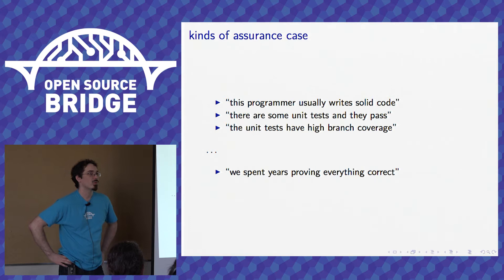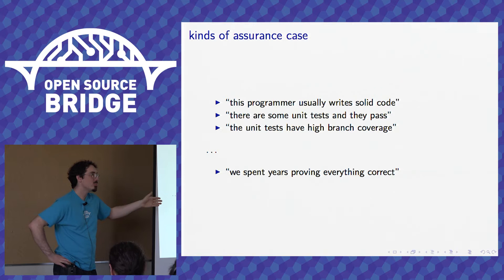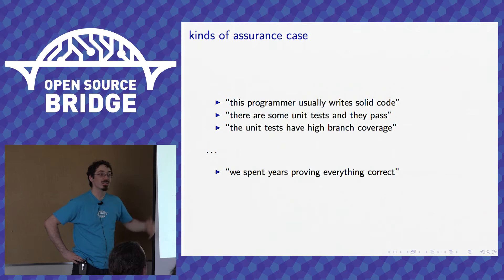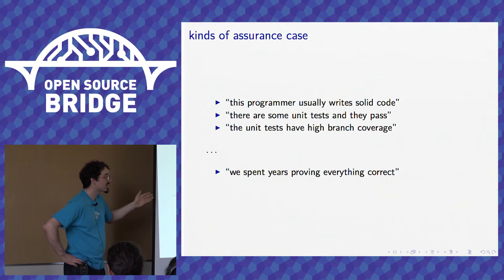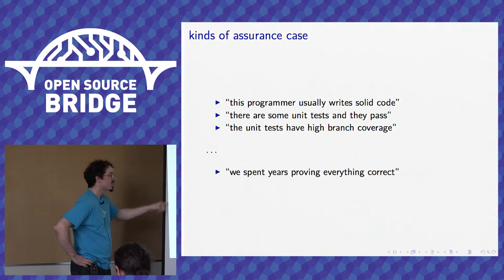Let's talk about what kinds of trustworthiness we might have — I'm going to call this an assurance case. One kind might be: I know the programmer who wrote this code, they usually do good work, it's probably fine. That's a certain level of assurance. A slightly better level: there are some unit tests and they pass. Maybe you've even checked the coverage metrics and found high branch coverage. If you keep going down this line, you might eventually get to spending years formally proving that everything is correct. That's really awesome if you can do it. Most of us can't, so let's talk about what falls in between these extremes.